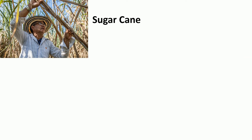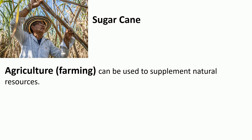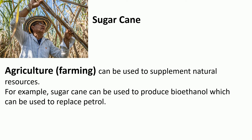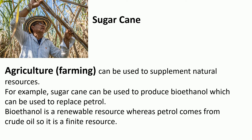Here we've got some sugar cane being grown, which is the plant that sugar comes from. This is a good example of agriculture or farming being used to supplement natural resources. Sugar cane can be used to produce bioethanol, a fuel that can replace petrol. When filling up at a petrol station now, 90% of the fuel is petrol but 10% is ethanol mixed in. Bioethanol is a renewable resource because, whereas petrol comes from crude oil — a finite resource — bioethanol comes from sugar cane, and we can always grow more plants to replace it as fast as we're using it.